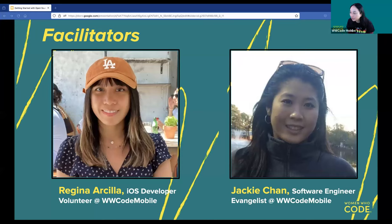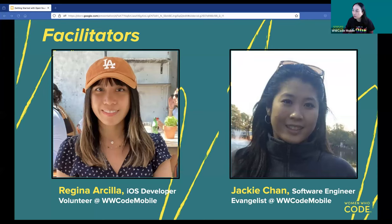Welcome everyone to today's talk on open source maintenance. I'm Vui Nguyen, the Leadership Fellow for the Women's Code Mobile Community. Let me introduce our event facilitators: Regina Arcelot is an iOS engineer who has participated in Hacktoberfest as a contributor. She works remotely from Vancouver with her adorable schnauzer, George. And Jackie Chan is a software engineer exploring web and Android development — she is the lead maintainer of the Women's Code Mobile GitHub account. Thank you, Jackie and Regina, for giving this talk today.